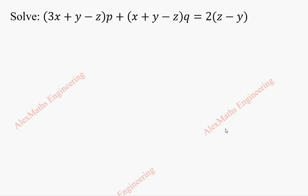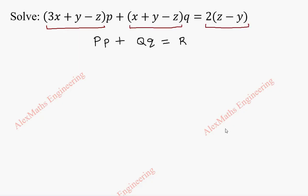Hi students, this is Alex here. In this video, we are going to find the solution for the given partial differential equation. This is of the form capital P into small p plus capital Q into small q equal to capital R. Here we find this is capital P, this is capital Q, and this entire term is capital R.